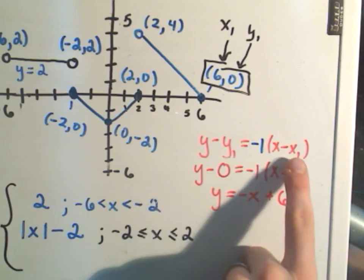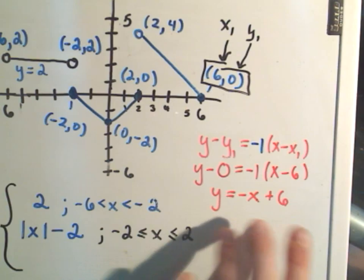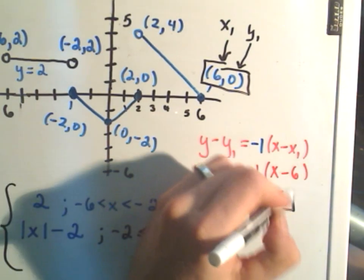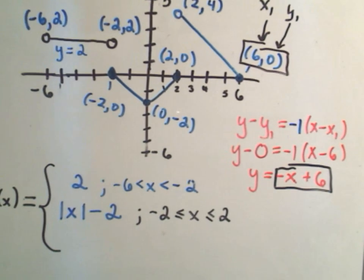Again, you could have used 2 as x₁, 4 as y₁. At the end though, you want to have the y isolated. This is going to be important because once you have the y isolated, whatever's left over to the right-hand side, the -x + 6, that's what you put inside of your formula.